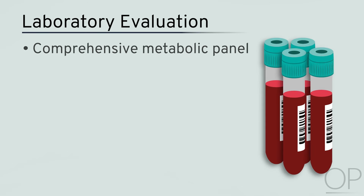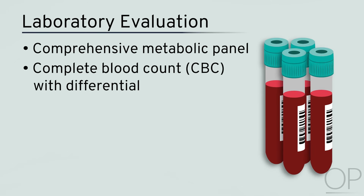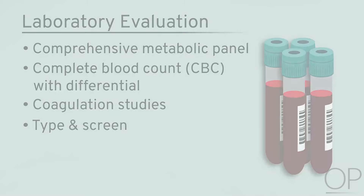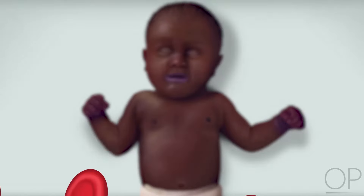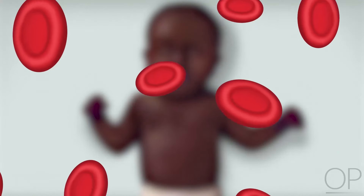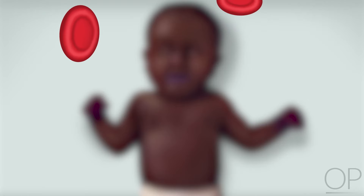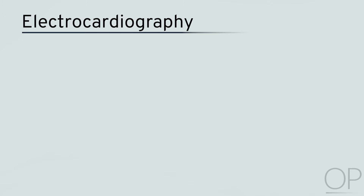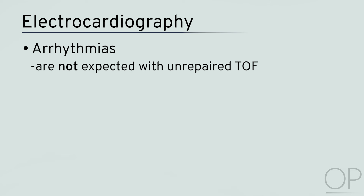Routine evaluation with a comprehensive metabolic panel, complete blood count with differential, coagulation studies, and type and screen are necessary. Preoperative hematocrit and hemoglobin are especially important. In the setting of cyanosis, elevated red blood cell counts are the primary compensatory mechanism to guarantee adequate oxygen delivery to the tissues. Unless the delivery was traumatic, neonates have elevated hematocrit values in the first days of life and are relatively protected. Maintaining a baseline ECG is routine practice preoperatively. Arrhythmias are not expected with unrepaired Tetralogy of Fallot preoperatively, but are quite common after repair — one example being junctional ectopic tachycardia.